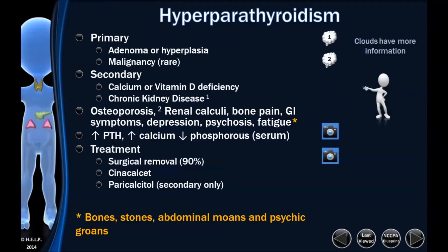As a clinical presentation, we talk about bones, stones, abdominal moans, and psychic groans: osteoporosis, renal calculi, bone pain, GI symptoms, depression, and psychosis. If you're making the gut absorb more, you get GI cramping. Osteoporosis occurs because calcium is leaving the bones. Renal calculi are related to what's happening in the kidney. Remember, they go together: increased parathyroid hormone means increased hypercalcemia.